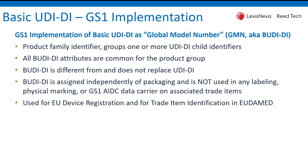GS1 did a good job identifying the fact that Basic UDI-DI was a product identifier grouping one-to-many child identifiers. There are some common attributes at the parent level that are common for all the device children. It doesn't replace the UDI-DI. It's not associated with packaging, and it's not actually placed on labeling or on the product labeling, and not to be used in data carriers such as a barcode. It was clear that this particular identifier was used for device registration and searching identification inside the database.